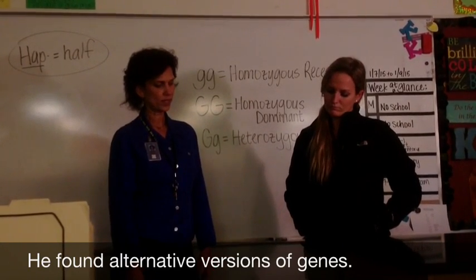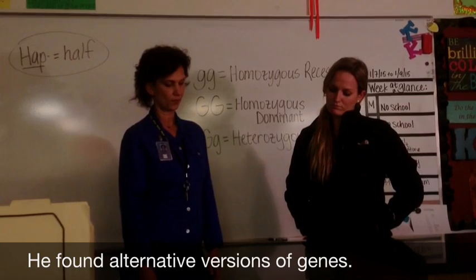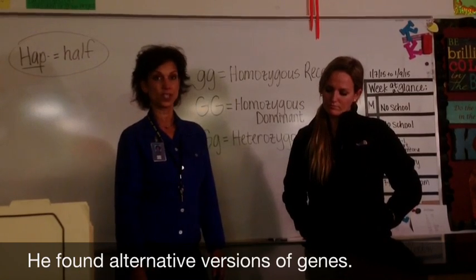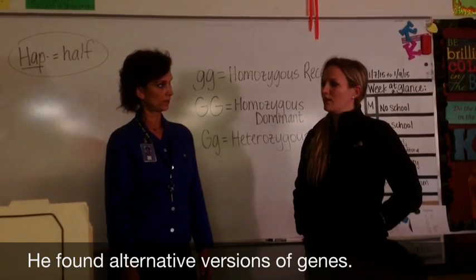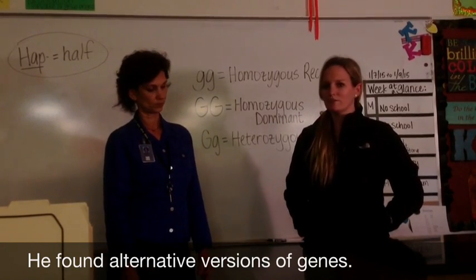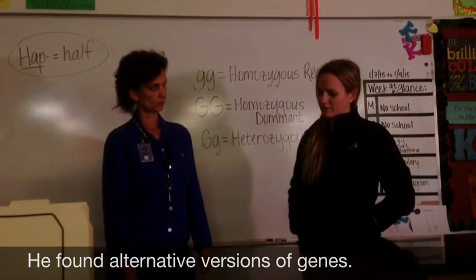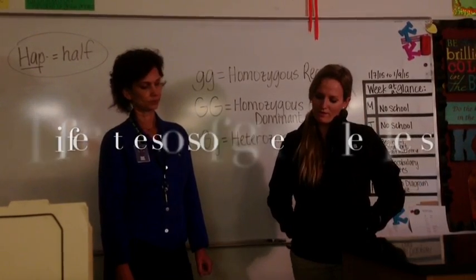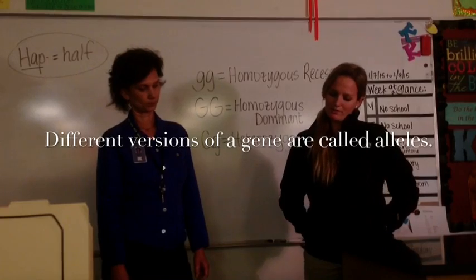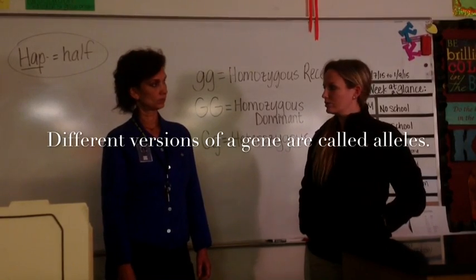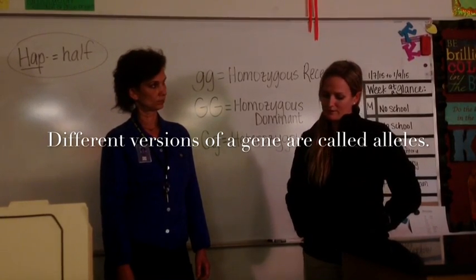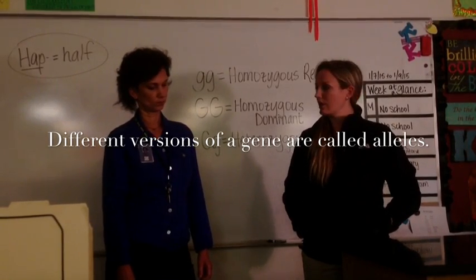So what are these different versions of genes called? Different versions of genes are called alleles. Other examples of alleles are tall or short pea plants, or green or yellow peas.